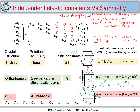So how many independent elastic constants do we have? When I know C₁₁ I know C₂₂ and C₃₃; when I know C₄₄ I know C₅₅ and C₆₆; and when I know C₁₂ I know C₁₃ and C₂₃. In total, you need just 3 independent elastic constants to completely correlate stress components to strain components for a cubic crystal structure.